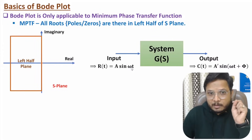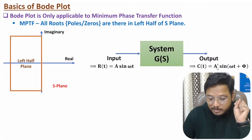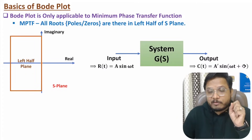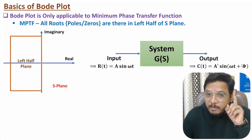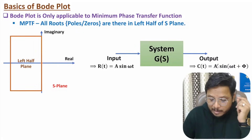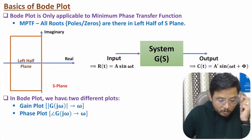By changing the frequency and analyzing the output, we observe amplitude A' and an additional phase φ. Based on variation of amplitude we can identify gain, and based on variation of φ we can identify phase. So in Bode plot we plot two different plots: one based on gain and one based on phase.